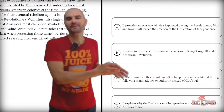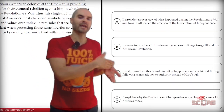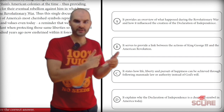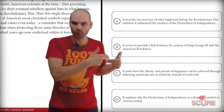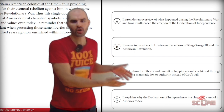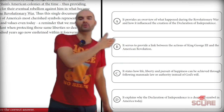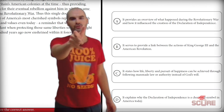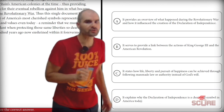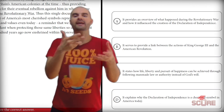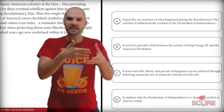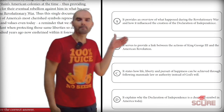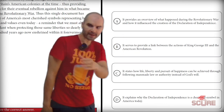Right away, I can tell that A is wrong because it's not explaining what happened during the war — it's explaining what happened before the war. The Declaration comes before. So A is wrong. B says it serves to provide a link between the actions of King George and the American Revolution. There's your answer. It is explaining the cause-and-effect relationship of George's actions to the revolution. B is correct.